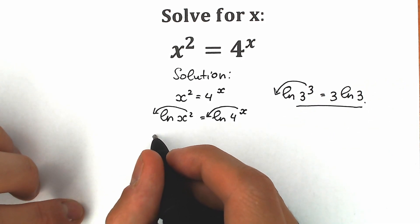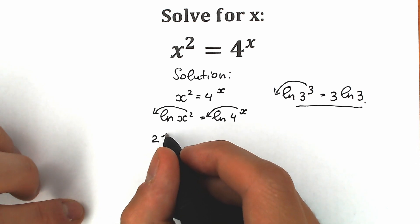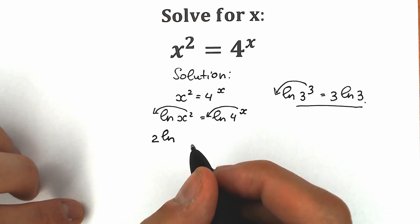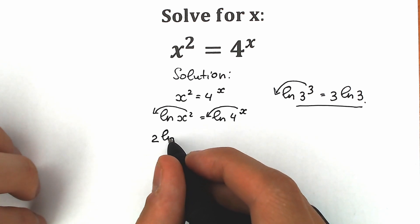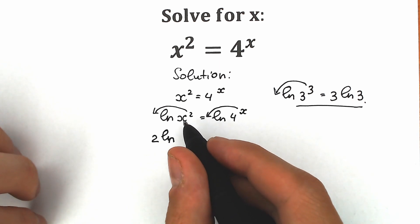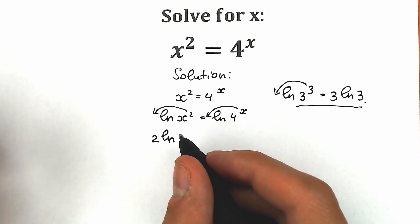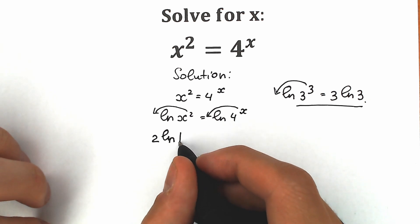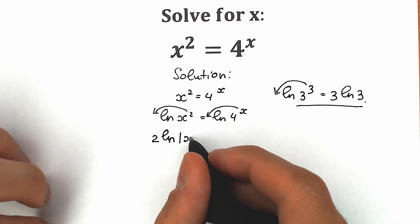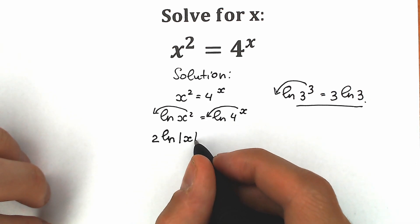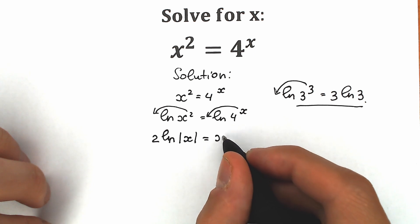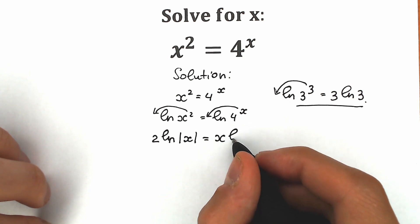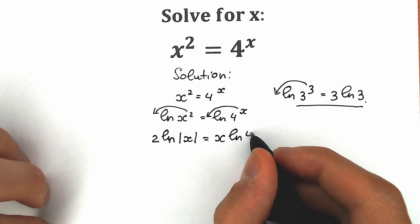Right now, in this case, we will have 2 natural log, but with one really tricky moment — we're talking about x². So x can be positive, x can be negative. Don't forget about this, and let's put this absolute value right here, which is equal to x times natural log 4.